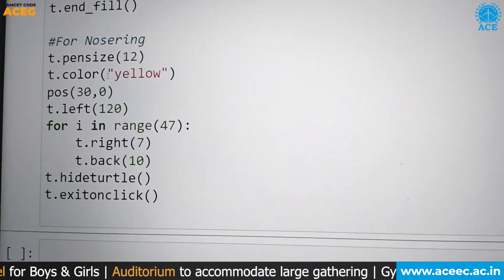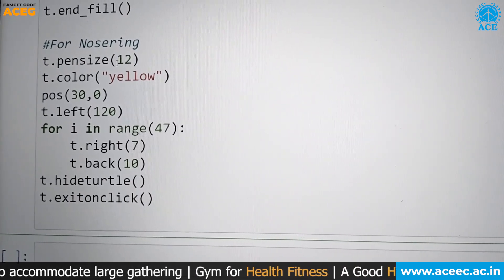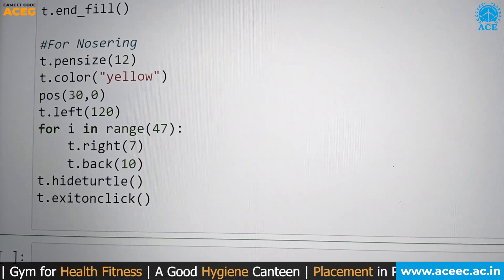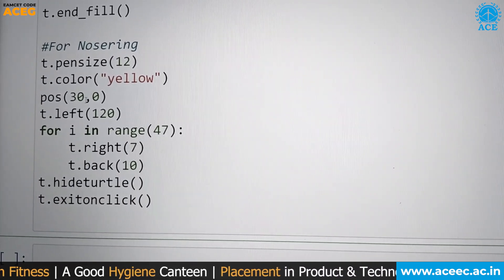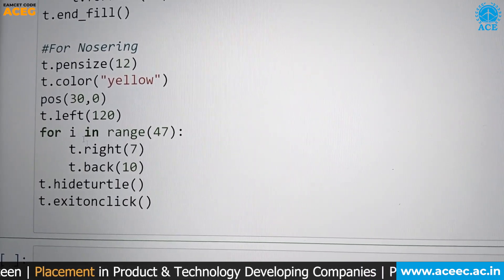To draw the nose ring for the Durga Mata, we use pen size as 12 and color for it as yellow. The position for the ring is 30 to 0. We use attributes like left, right, and back for the for loop to draw the nose ring.